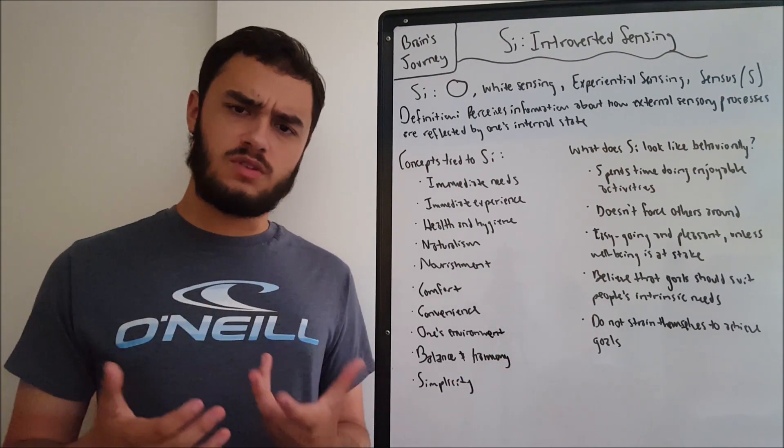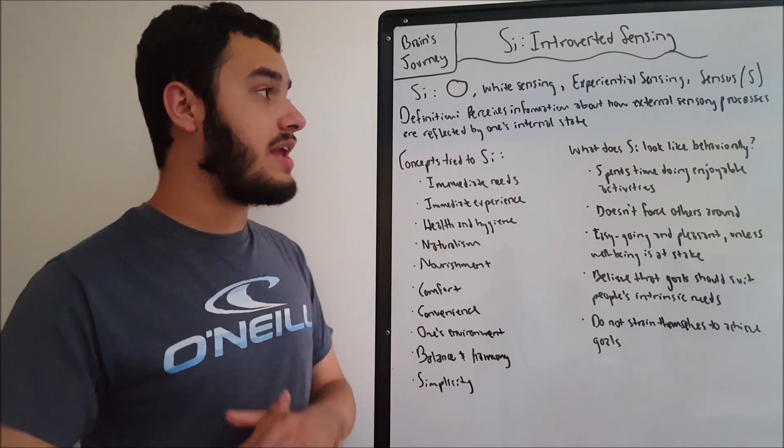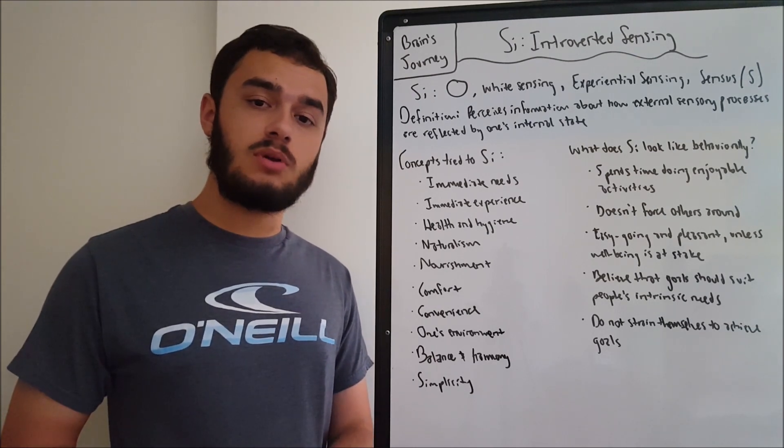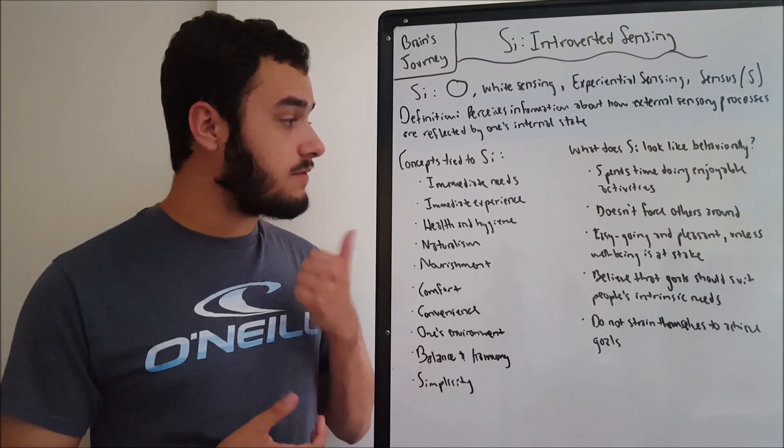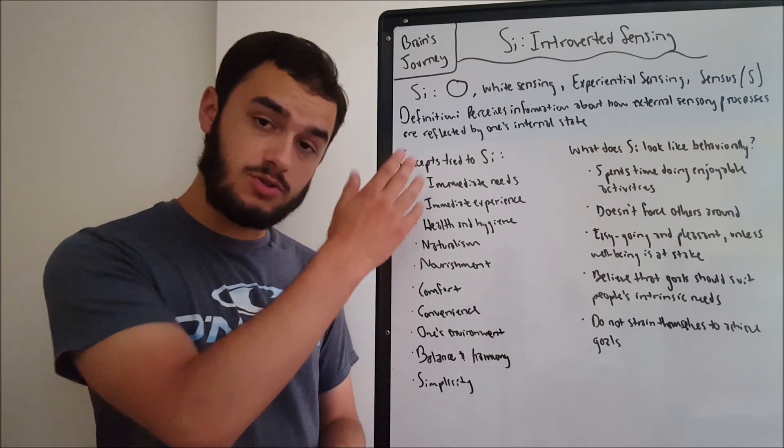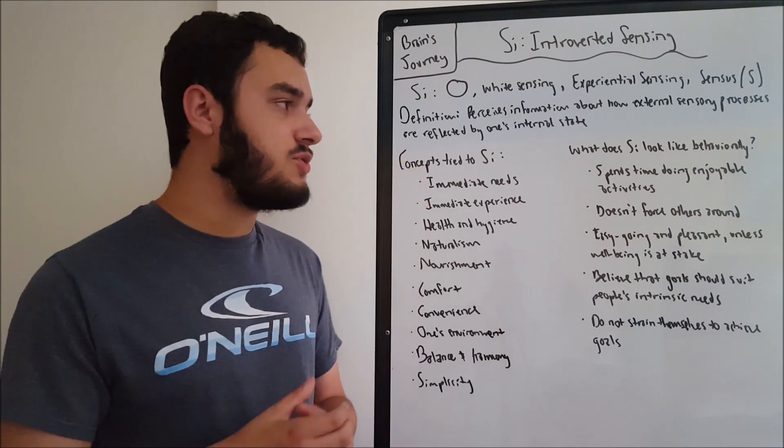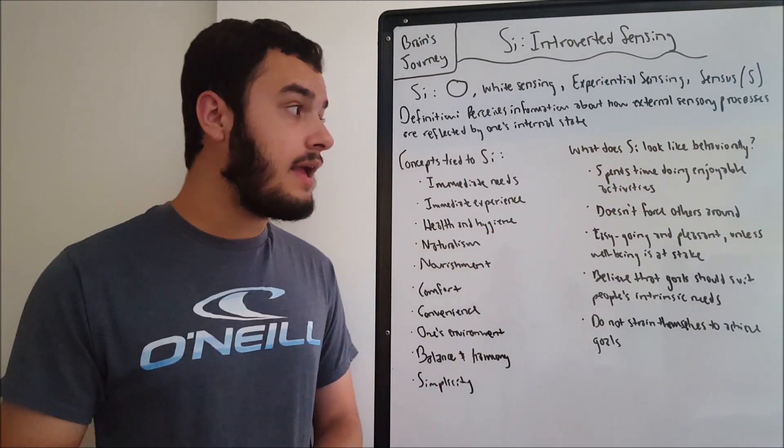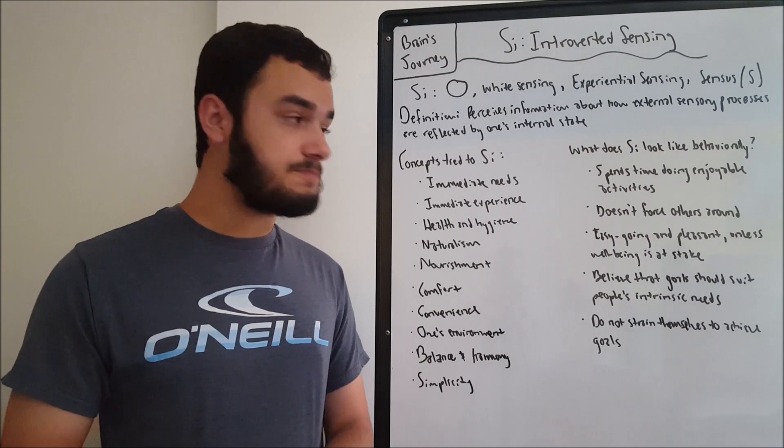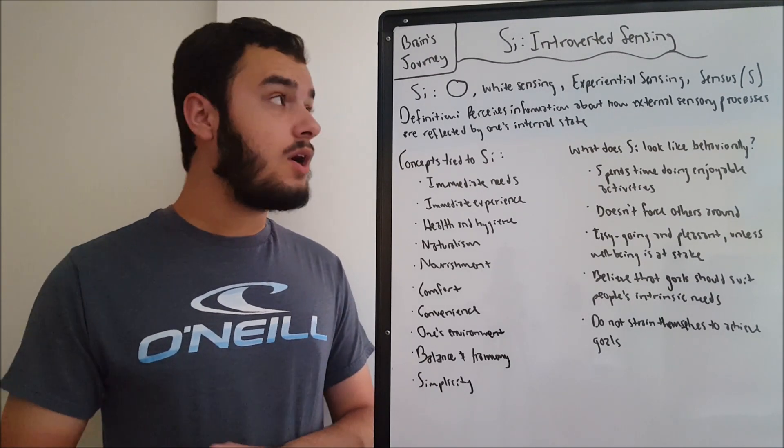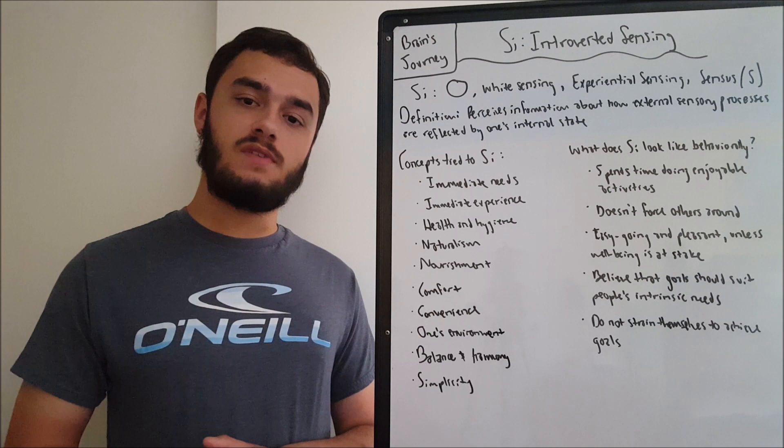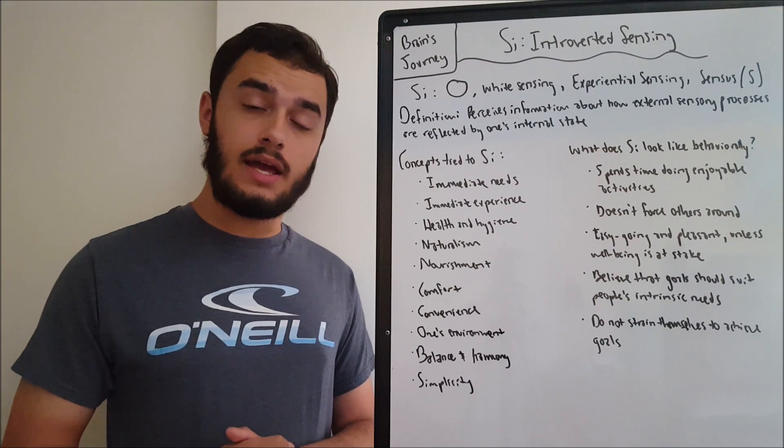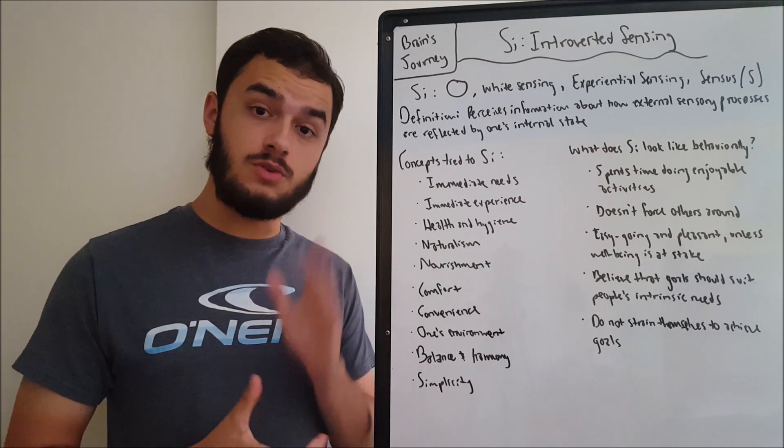So what have we gone over in this lecture? In conclusion, we went over some alternative names, as we will be and always have done. We went over the logical definition, but obviously that wasn't enough. We went over some concepts that are tied to SI to bolster the definition, and then to add on to everything that we talked about, we went over some behavioral manifestations so that you can begin to identify SI in your environment. So that's the lecture. Hope you enjoyed. Hope this was comprehensive enough. Next lecture, we'll be getting into NE, extroverted intuition. So stay tuned for that, and hope you all have a good one, and I'll see you in the next lecture.